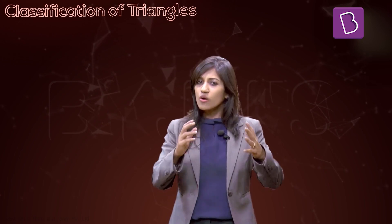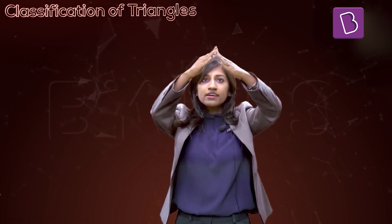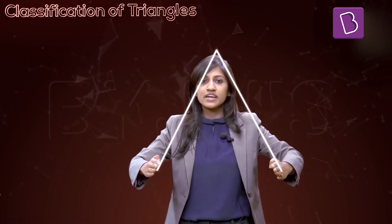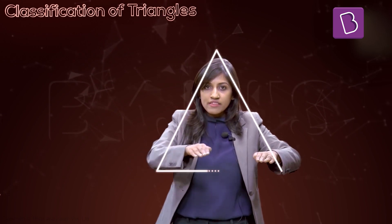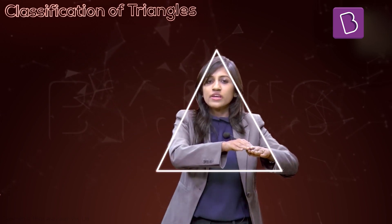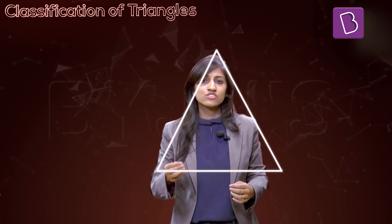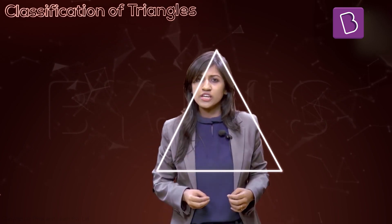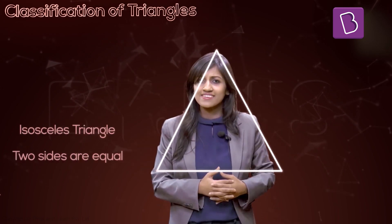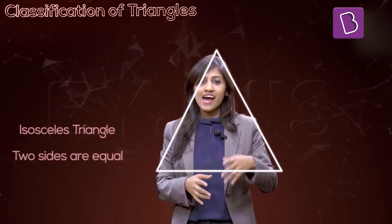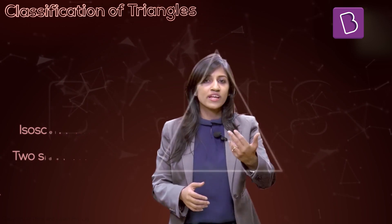Then you have another type of triangle where two sides are equal. So how would you draw a triangle where two sides are equal? Say these two sides are equal, and this side is not equal. This triangle also has a special name — it's called an isosceles triangle.